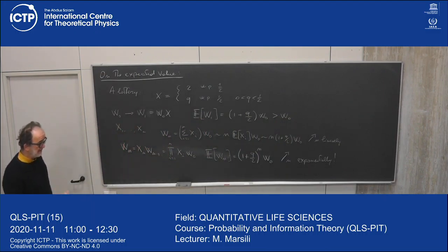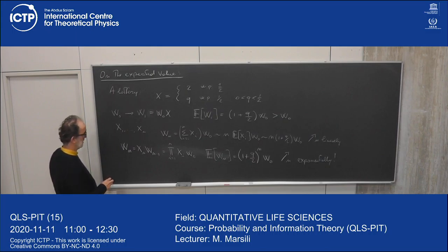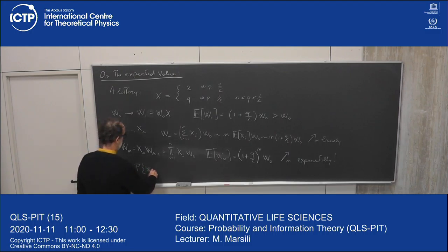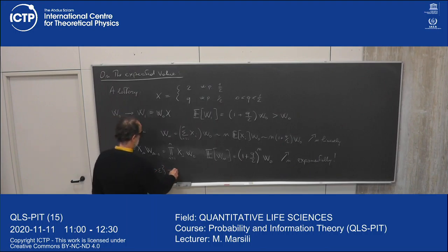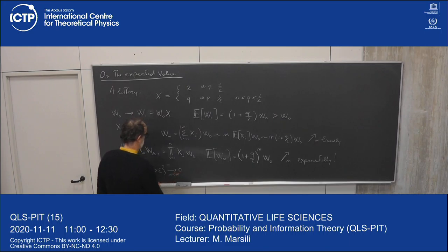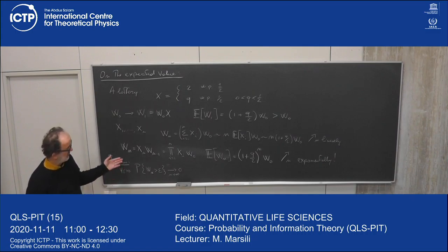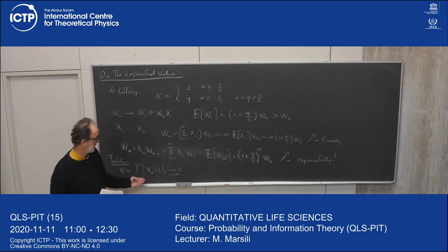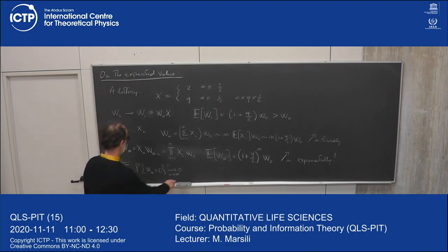This seems even more profitable. However, there are problems. You can show that for any positive epsilon, the probability that your capital is larger than epsilon goes to 0 as N goes to infinity. This looks counterintuitive because you expect your capital to grow exponentially, but you can prove that you are going to be bankrupt with probability equal to 1. Almost surely you are going to be bankrupt. Let me show why this is the case.